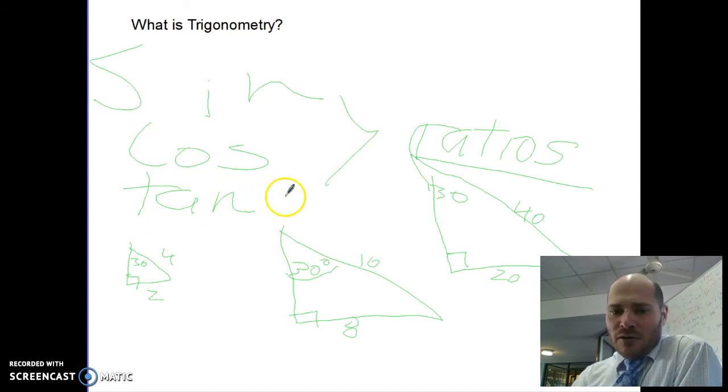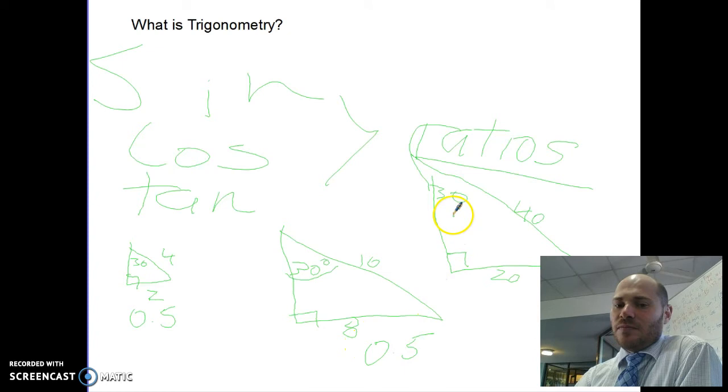So for every triangle that's 30 degrees here, they went, well, if I get that side and divide it by that side, 2 divided by 4 was a half. That side divided by that side, 8 divided by 16 is a half. That side divided by that side, 20 divided by 40 is a half.